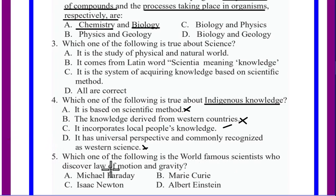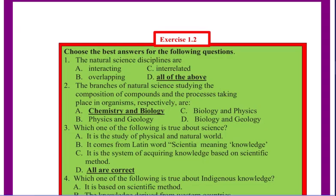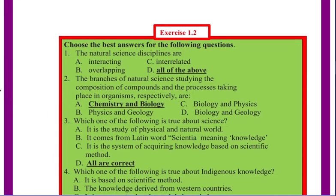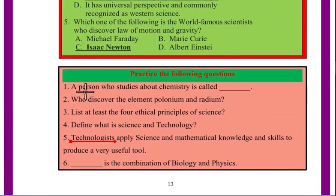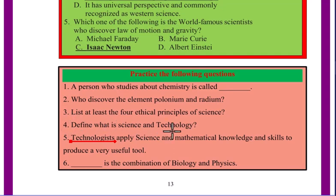Which of the following is the world-famous scientist who discovered the law of motion and gravity? Who discovered the elements polonium and radium? List at least three ethical principles of science. The principle of science includes the responsibility of science. Define what is science and technology.